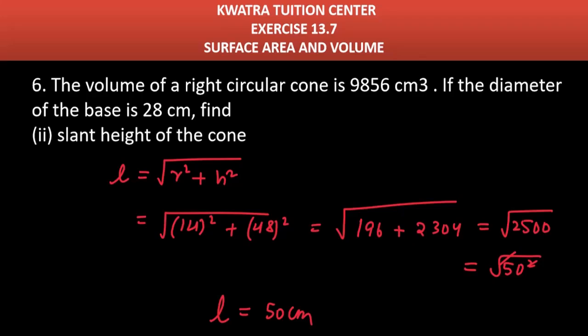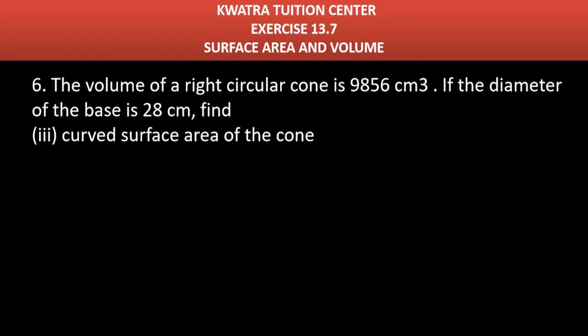Now moving to the last part of question number six, we have to find the curved surface area of the cone which is πrl. π is 22/7, r is 14, and l is 50. 7 and 14 cancel to 2, and you get 44 × 50. Multiply them together to get 2200 cm². So this is the answer for question 6.